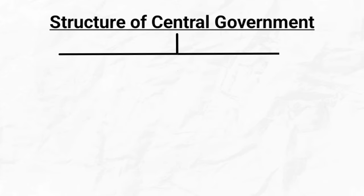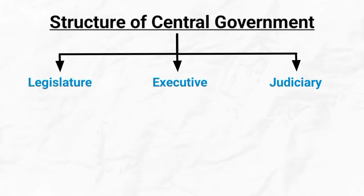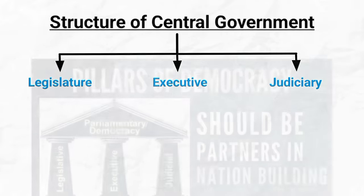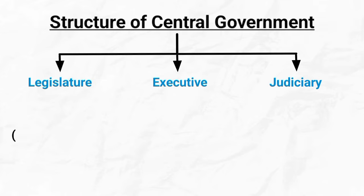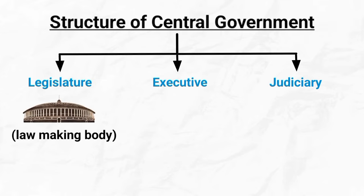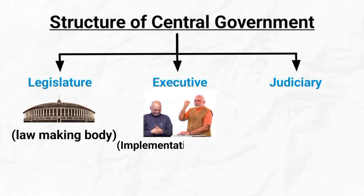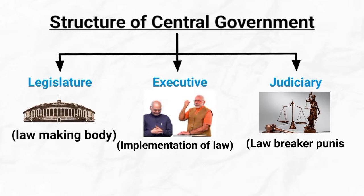The Indian government structure consists of the legislature, executive, and judiciary. These are the three pillars of democracy. The legislature is the law-making body. The executive implements the law, and the judiciary interprets and enforces the law.